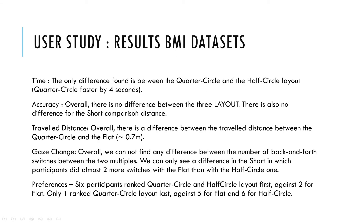With the BMI dataset, the main difference found was that the quarter-shell was faster than the half-shell by 4 seconds. There was no difference in accuracy between the three layouts, nor in short-distance comparison. In travel distance, there was a difference between the quarter-shell and flat layouts of 0.7 meters. For gaze, no difference was found in back-and-forth switches overall, except at short distance where participants made almost two more switches with flat than with the half-shell. For preferences, six participants ranked quarter-shell and half-shell first, against only two for flat. Only one participant ranked quarter-shell last, versus five for flat and six for half-shell.